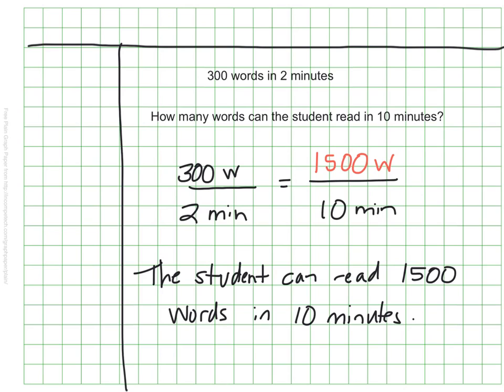How'd you do? I saw that I needed to scale the ratio up by multiplying by 5 because 2 times 5 is what gave us 10. So I did 300 times 5 and found that it was 1,500. The student can read about 1,500 words in 10 minutes.